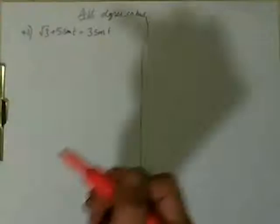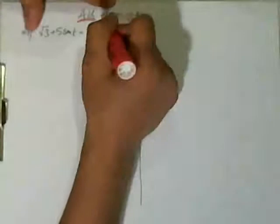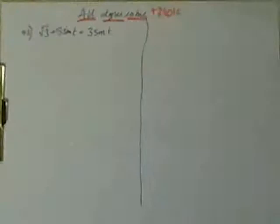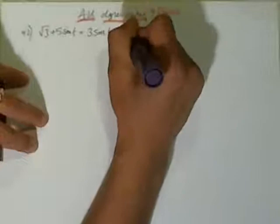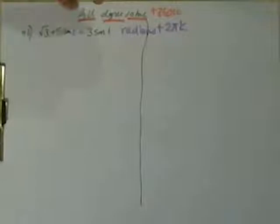And it says find all degree solutions. Every time you see the word all solutions, ding, ding, and it's in degree, you're going to go plus 360k. When it says radians, I'm going to go plus 2πk, okay? So that's a little hint. Make sure you write that in. All degree solutions.